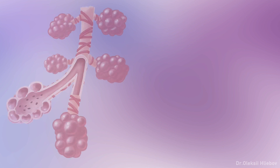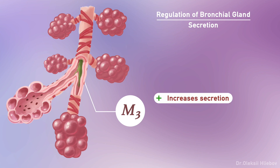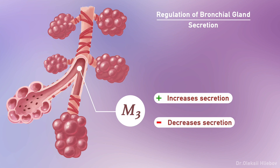The second point to mention is regulation of bronchial gland secretion, as they play a major role in airway secretion. In bronchial glands, we have M3 subtype of muscarinic cholinergic receptors only, and stimulation of these muscarinic receptors causes an increase in secretion. Blockade of these receptors causes a decrease in secretion.